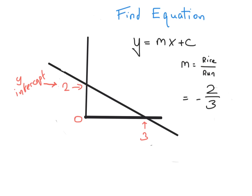How to find the equation of a line when you're given just a simple diagram? Here's the trick: if you can easily see where the y-intercept is — in other words, where the line cuts the y-axis — and you can figure out what the slope is, then you can use y equals mx plus c to quickly get the equation of the line.